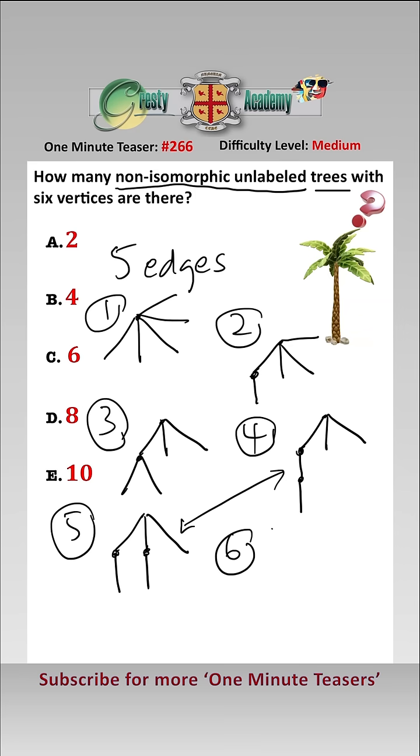And finally, the sixth way is basically just the line one, two, three, four, five, where four vertices have two edges and two have one edge.